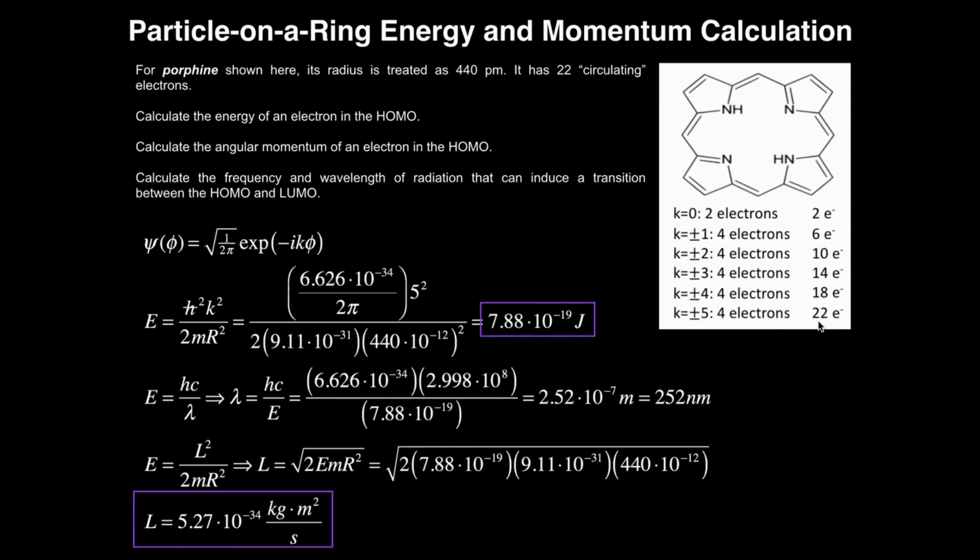Now, let's do something else. Let's calculate the frequency and wavelength of radiation that can induce a transition between the HOMO and the LUMO. So basically, we just need to use this energy calculation, what we just did, to calculate what wavelength of light, what frequency of light, could actually induce this transition.